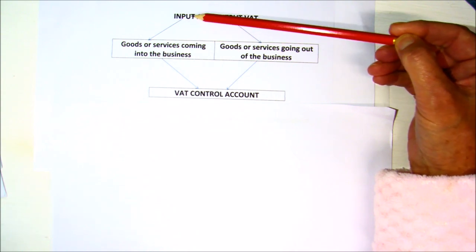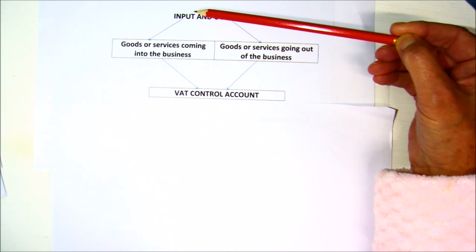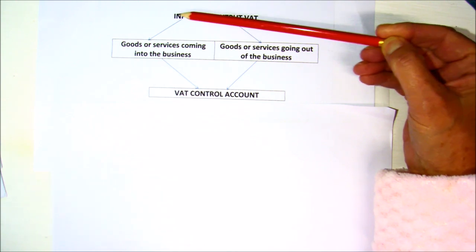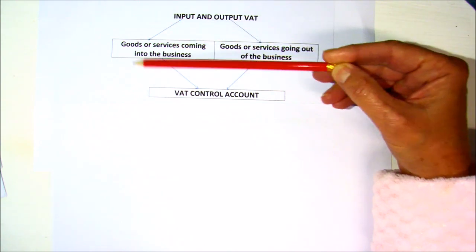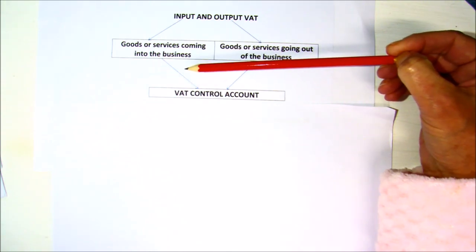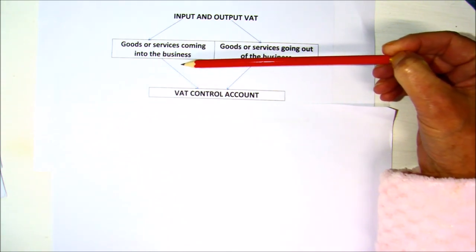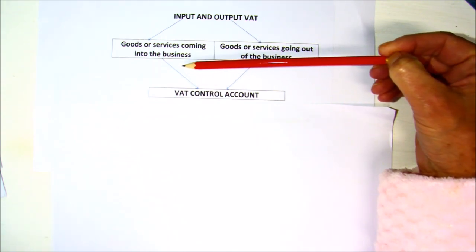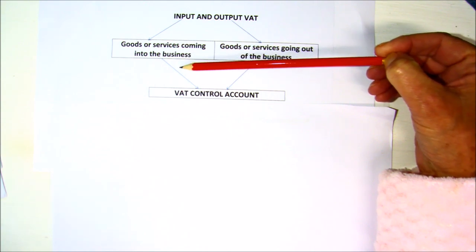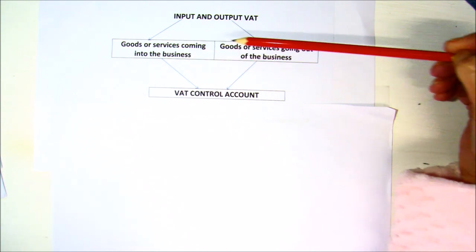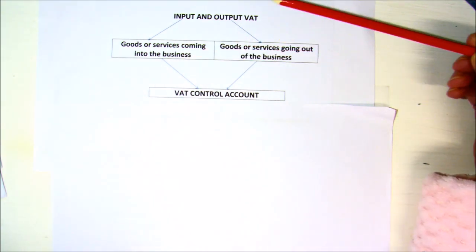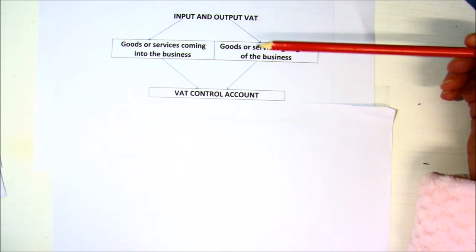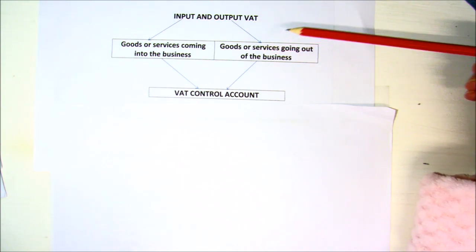As long as you are a registered VAT dealer — in other words, your turnover must be over a million rand — any VAT that you pay on your goods or services that are to be used in the business can be claimed back. SARS owes you that money back.